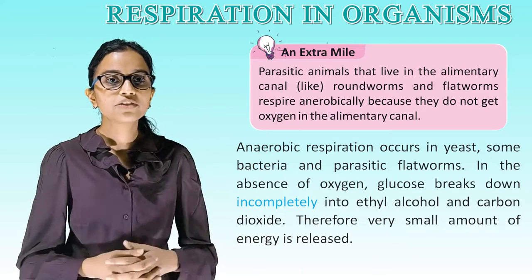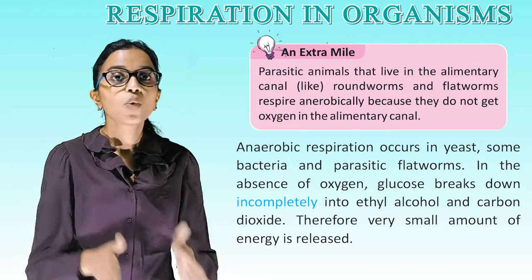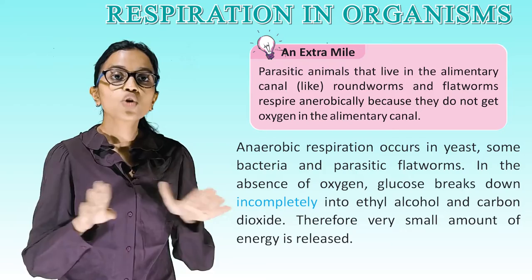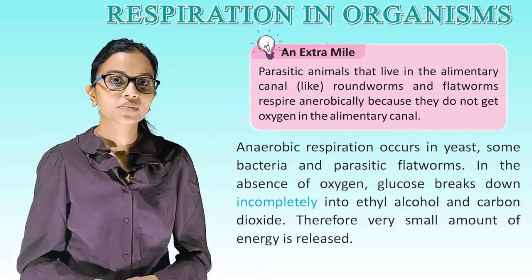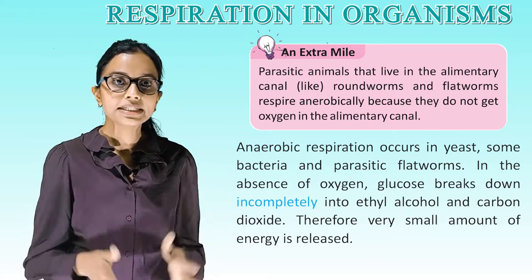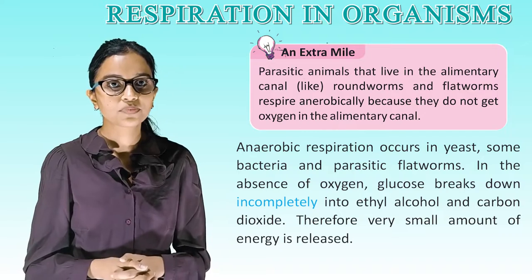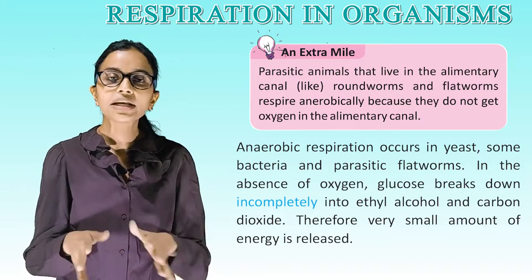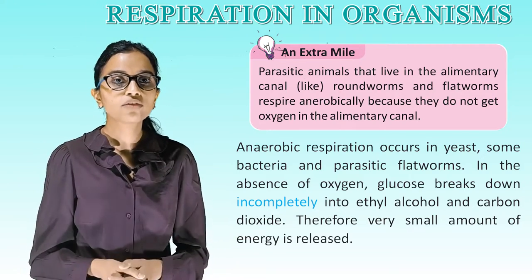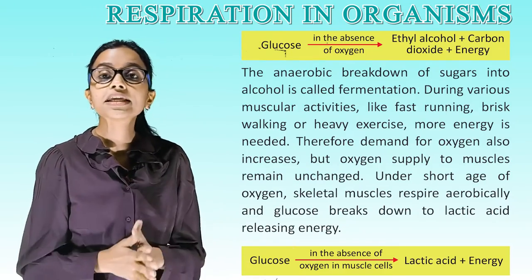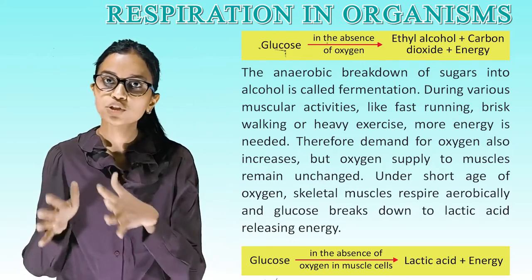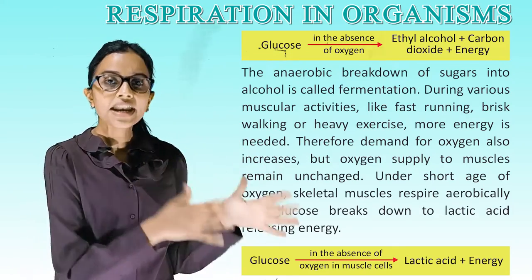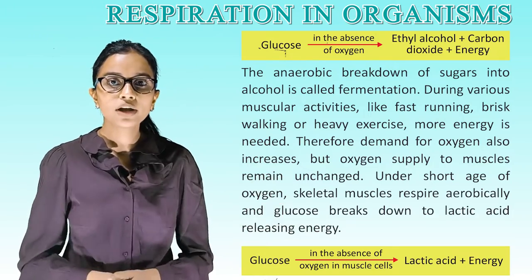Parasitic animals that live in the alimentary canal, like roundworms and flatworms, respire anaerobically because they do not get oxygen in the alimentary canal. Anaerobic respiration occurs in yeast, some bacteria, and parasitic flatworms. In the absence of oxygen, glucose breaks down incompletely into ethyl alcohol and carbon dioxide, and therefore a very small amount of energy is released. The equation for anaerobic respiration is: glucose → ethyl alcohol + carbon dioxide + energy. The anaerobic breakdown of sugars into alcohol is called fermentation.